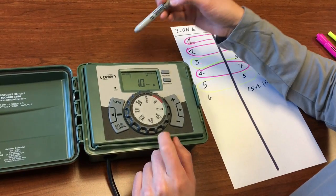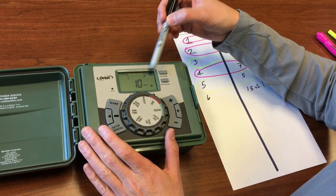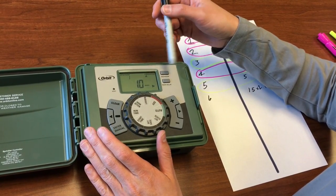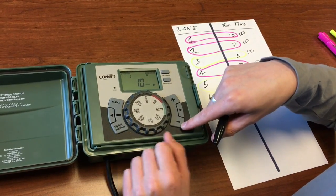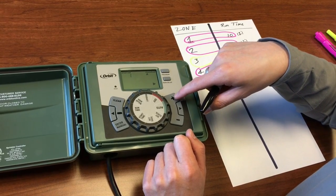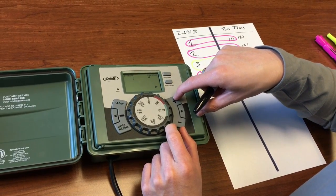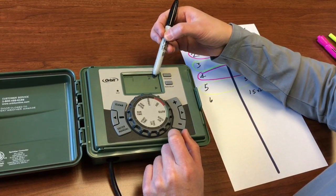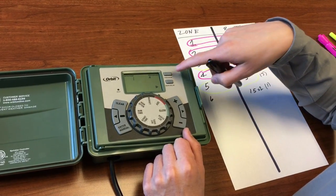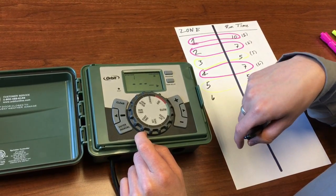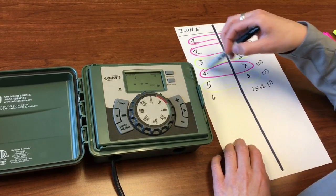Now this is the part where a lot of people get tricked up. They're going to go here and they're going to say wait a second I don't want zone 1 to run, and then they'll adjust that time and then zone 1 won't run like it's supposed to for 10 minutes. That's because they have the program still set to A.